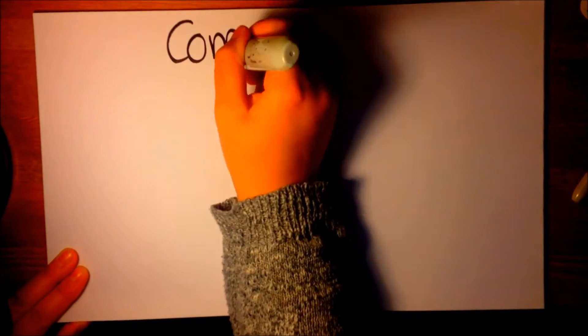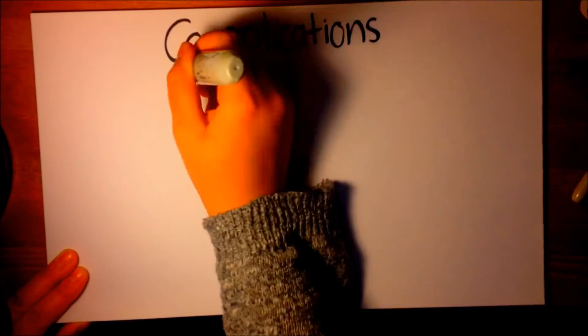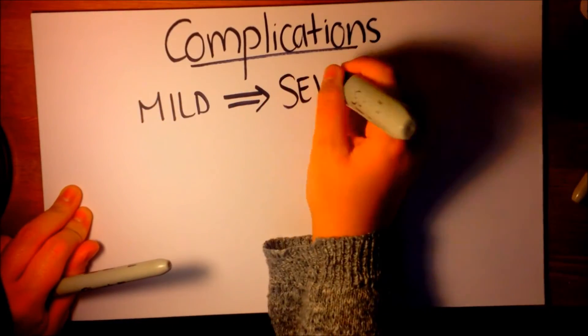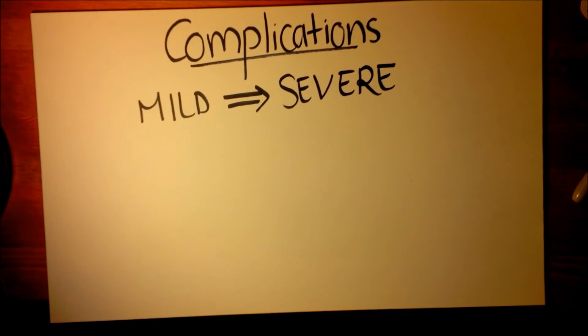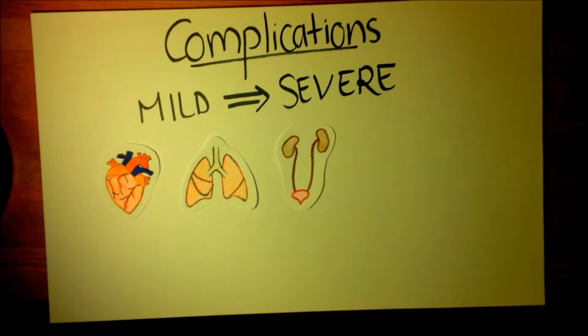Many complications can arise due to scleroderma and they range from mild to severe. As previously mentioned, these may include tissue damage in the heart, the lungs, the kidneys, the fingertips, and the digestive system.